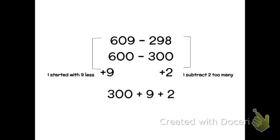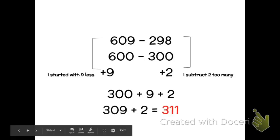So if you remember we started with 609, well 600 is nine less than what I really need, but with this problem it's already a subtraction problem so I have to make sure I add my numbers back in at the end. So 300 plus 9 plus 2, and that would give me 311.